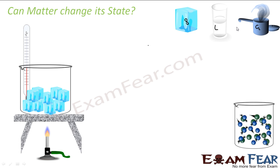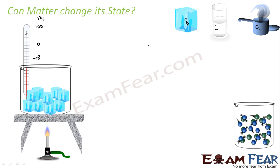Let's do an experiment. Here we have a beaker with ice cubes and a thermometer. If you notice the temperature here, it may be let's suppose minus 10 degrees Celsius. Let me put a graph here — it is minus 10 degrees Celsius, then we have 0 degrees Celsius, then 100, and let's suppose 120 at the max. It is all in Celsius.